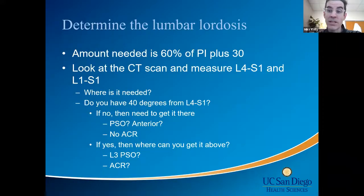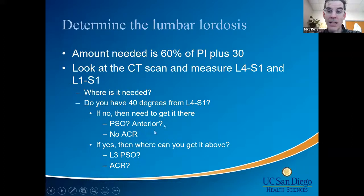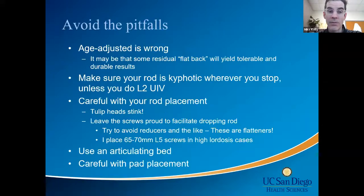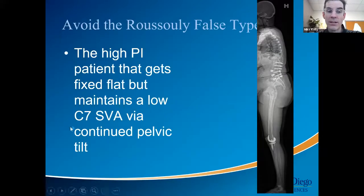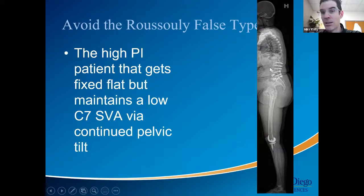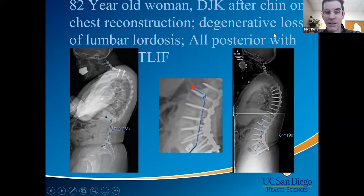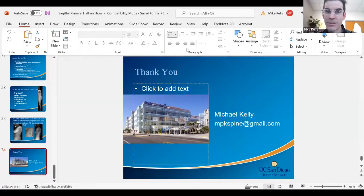L1PA is part of why we've moved away from anterior column reconstructions — ACRs with all-level sacrifice for flat backs. If you have a flat back, you must put lordosis in the right place. If you get the lordosis magnitude right but the L1 pelvic angle is wrong, they'll continue with pelvic retroversion and will fail. We need to avoid the false type 2 — a little S-shape but with pelvic retroversion in a high PI patient. That patient will just continue to degenerate unless you fix it all.